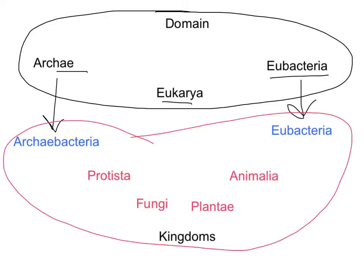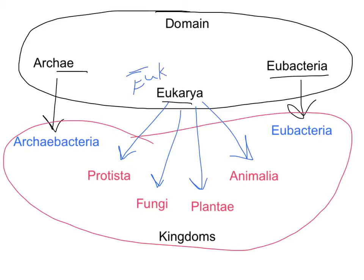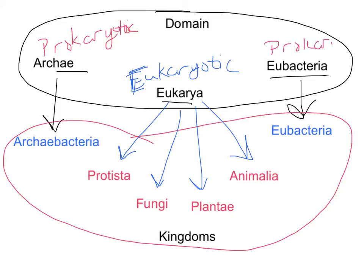Today we're going to focus on the Eukarya domain and the four kingdoms that are part of it: Protista, fungi, plants, and animals. The big difference between these domains was prokaryotic versus eukaryotic. The Eukarya domain contains eukaryotic organisms — things that have membrane-bound organelles — while the Archaea and Eubacteria domains were both prokaryotes and did not have any membrane-bound organelles. They were both types of bacteria.